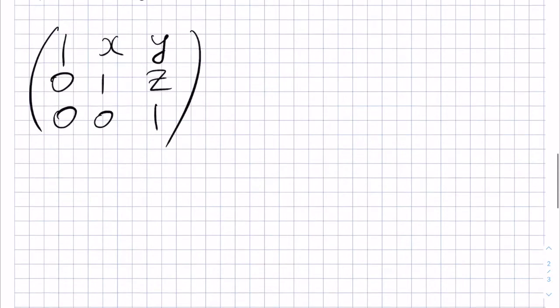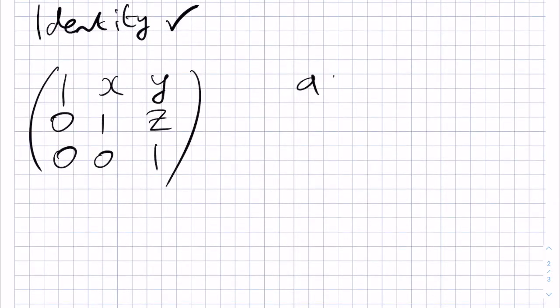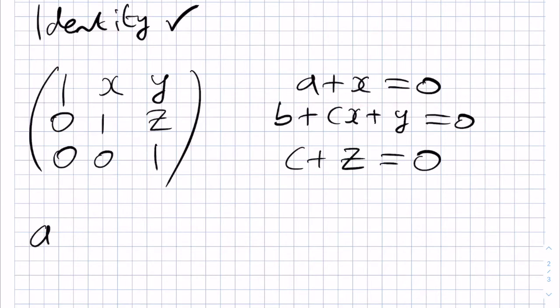As a result, we need A plus X to be 0, we need B plus CX plus Y to be 0, and C plus Z to be 0. We're choosing A, B, and C, so the first equation tells us that we choose A to be minus X, the last equation tells us to choose C to be minus Z,